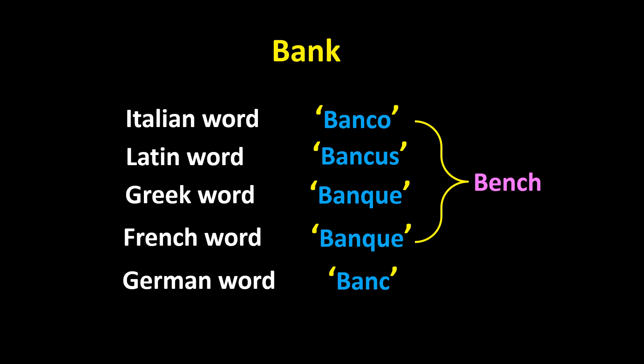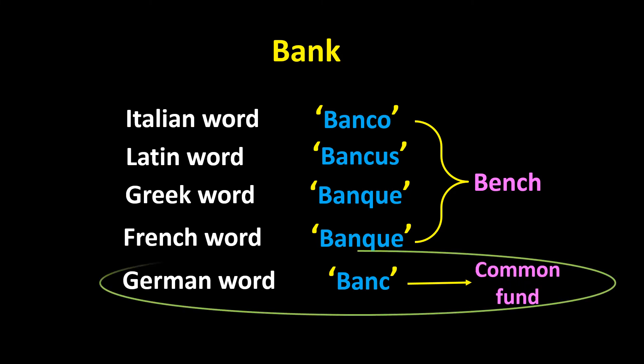And if the banker failed to meet his obligation, the bench on which he used to sit and carry on this money lending business was broken up by the people and he was taken as a bankrupt. That is why many authorities opine that the term bank has been derived from any of these four words. But some other people have the opinion that the term bank has been derived from the German word bank, because it means common fund or joint stock fund.